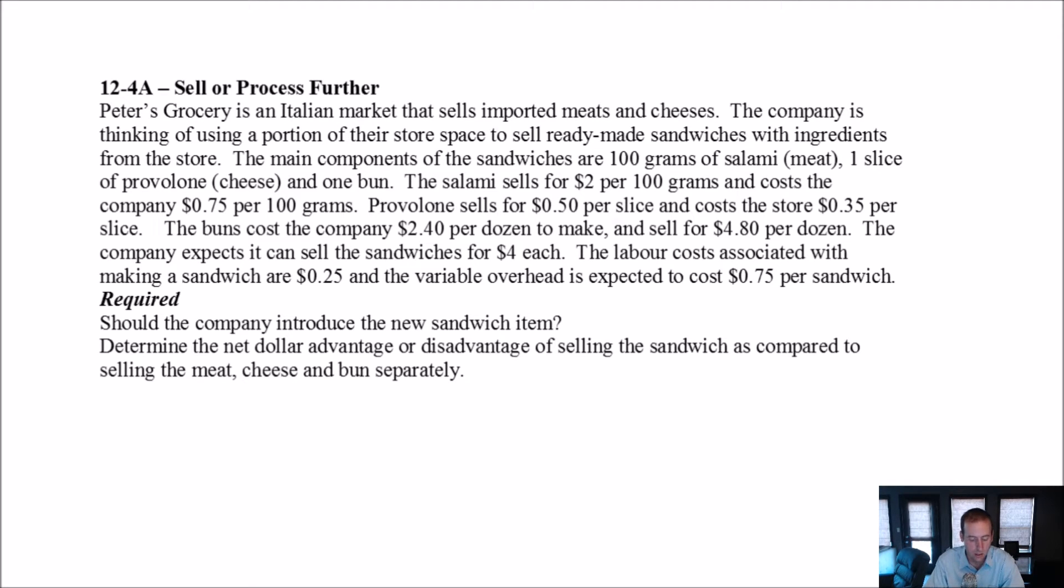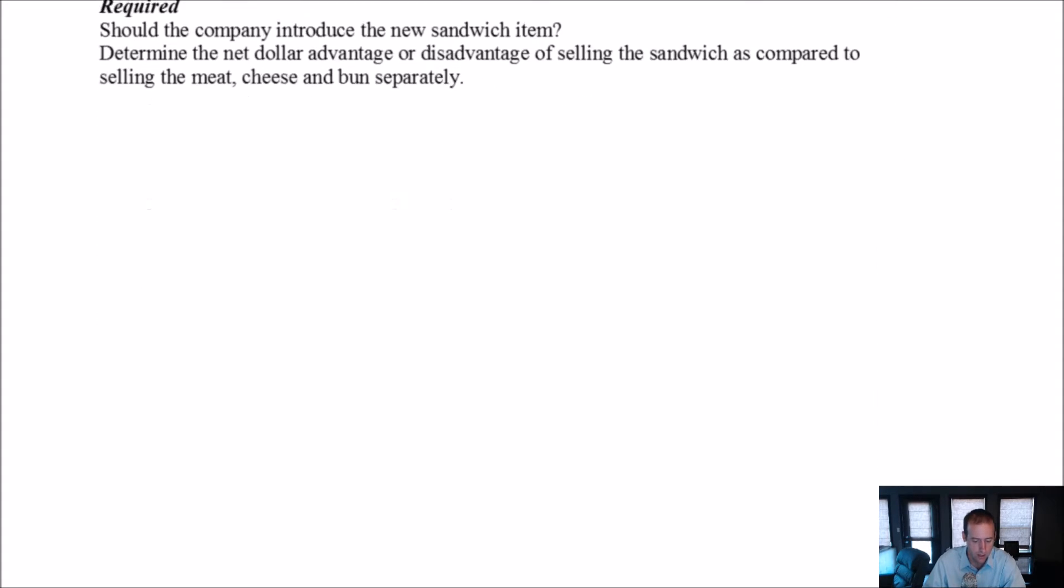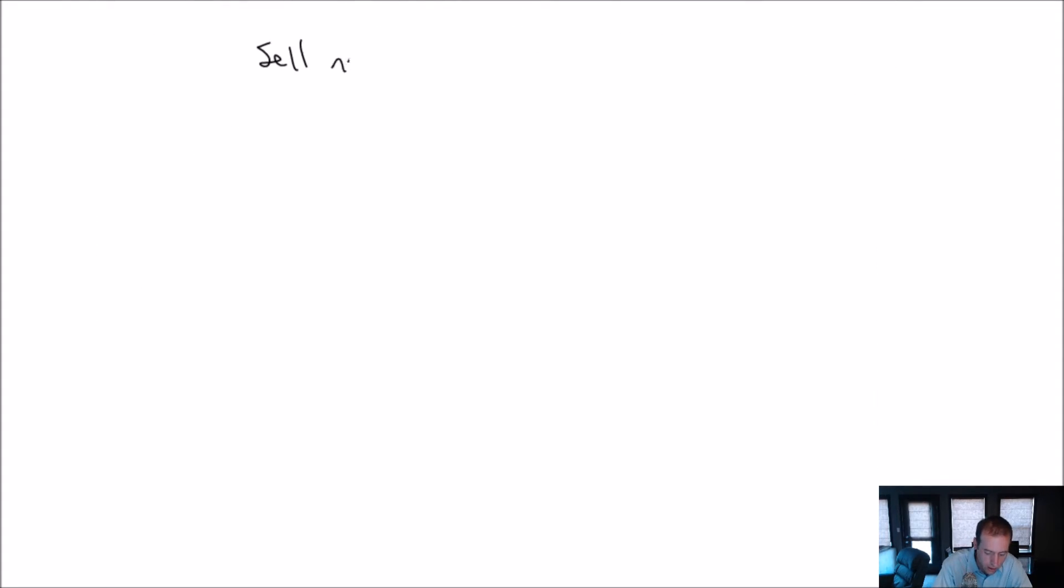Okay, so should the company introduce the new sandwich item, what's the dollar advantage or disadvantage of doing so? So we've got really two options we're determining about this stuff. We can either sell now, which is sell all of our raw materials, our salami, as salami. We don't have to make it into a sandwich. We can just sell it as salami, or we can process further, and it's really the battle, right? Sell now versus process further.